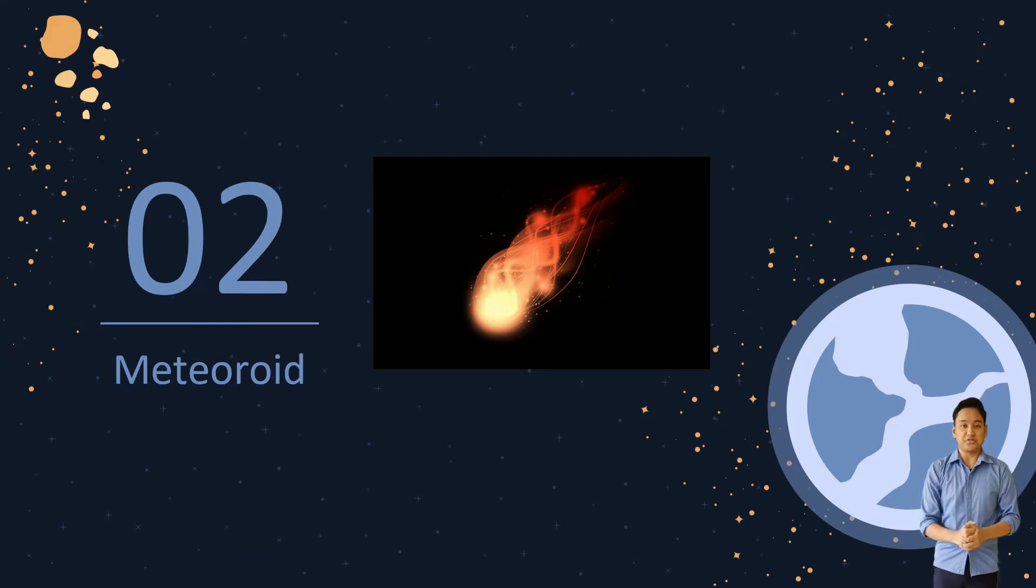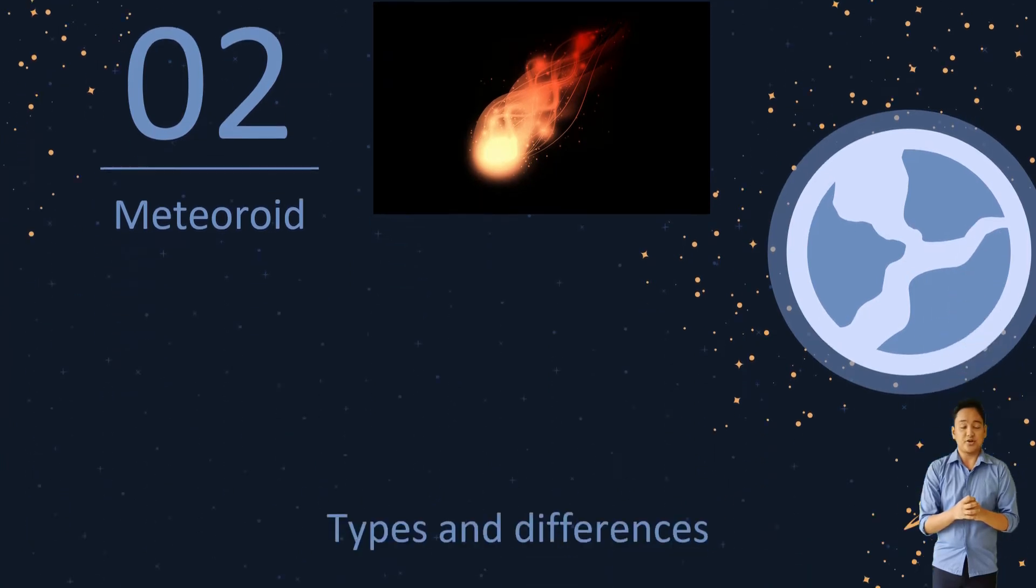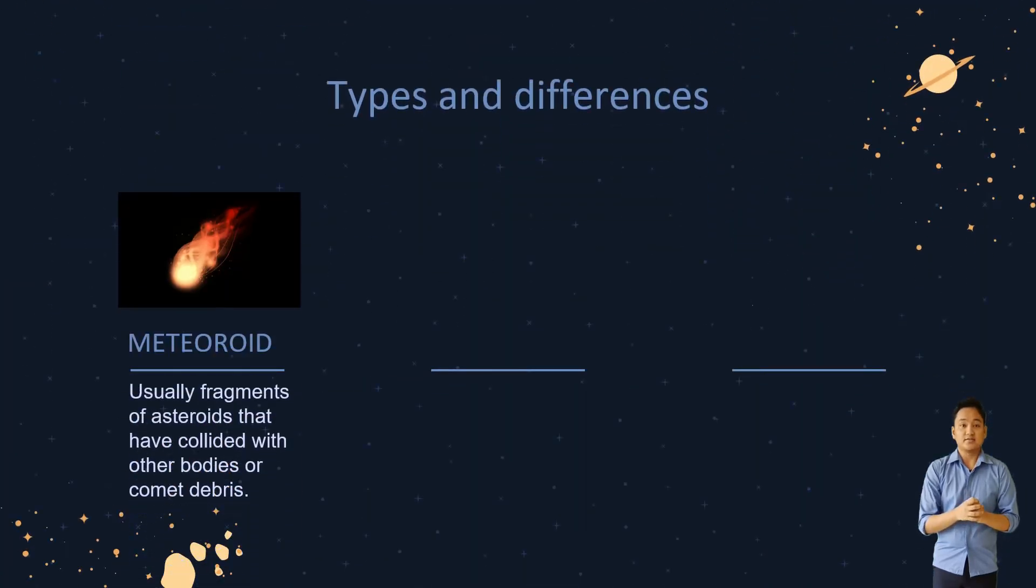Next are meteoroids. Meteoroids are usually fragments of asteroids that have collided with other bodies or comet debris. Some meteoroids are made up of rocks, some of them are made up of metals, and some of them are a mix of both.